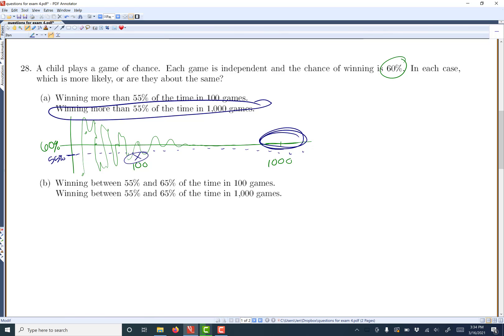Now for part B, let's say you want to win between 55% and 65% of the time. So here's your 60%, here's 100, here's 1,000. Again, you'll kind of bounce around in the beginning and you slowly get closer and closer and closer to what you're supposed to be.